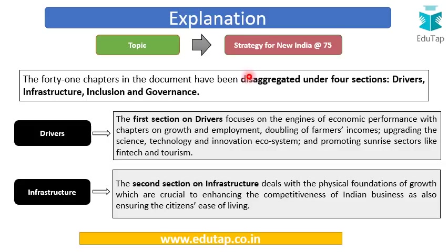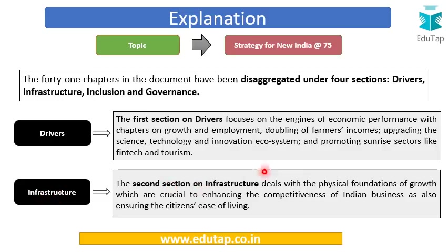The 41 chapters have been divided into four sections: Drivers, Infrastructure, Inclusion, and Governance. These are very important to remember. The Drivers section is the first and talks about the engines of economic performance, focusing on growth and employment, doubling the income of farmers, upgrading the science, technology and innovation ecosystem, and promoting sunrise sectors which are FinTech — financial technology — and the tourism sector. The Infrastructure section talks about the physical foundations of growth, crucial to making India a competitive economy where businesses can operate easily and promote ease of living for citizens.